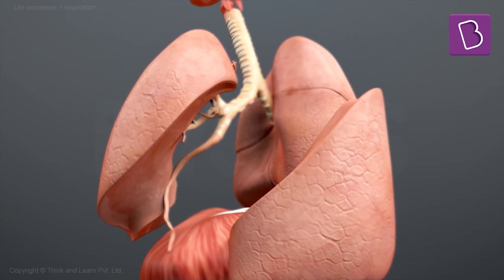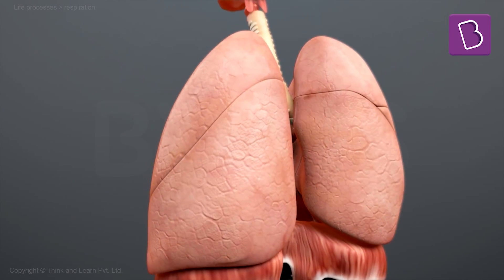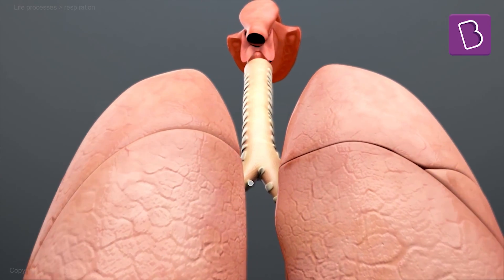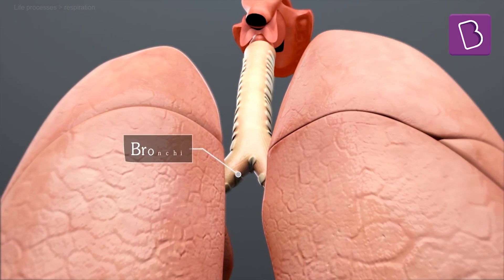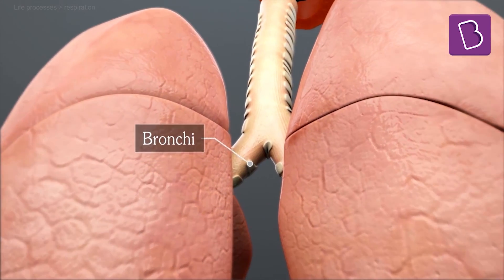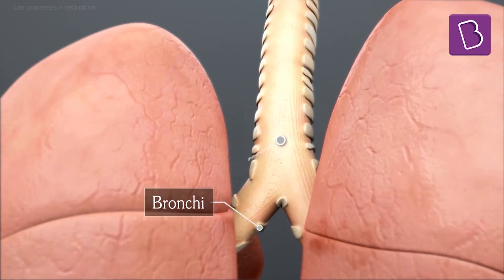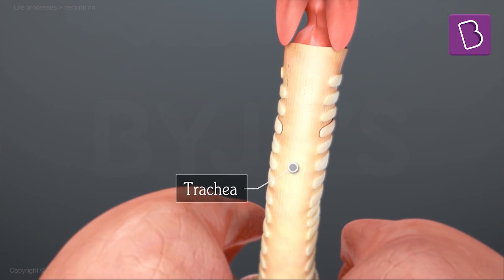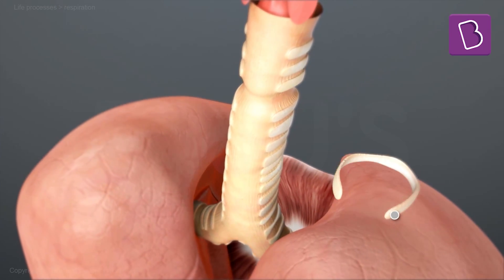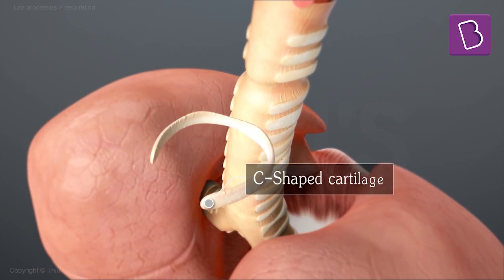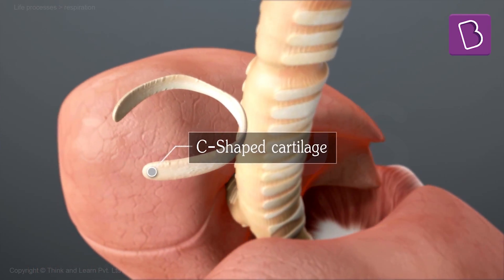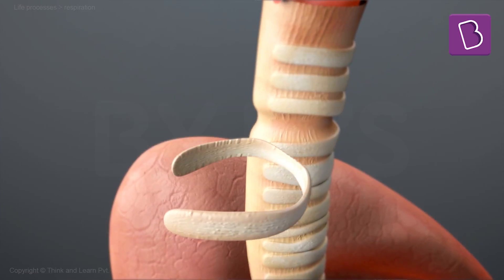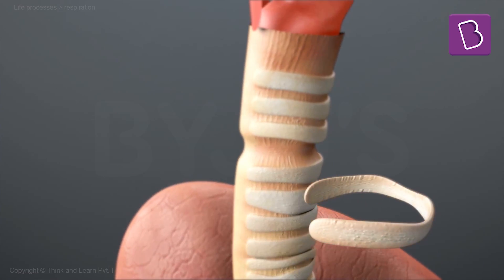Both the lungs are associated externally with small tubular bronchi which unite and extend into the trachea. The trachea has incomplete C-shaped rings of cartilage which prevent the tracheal walls from collapsing.